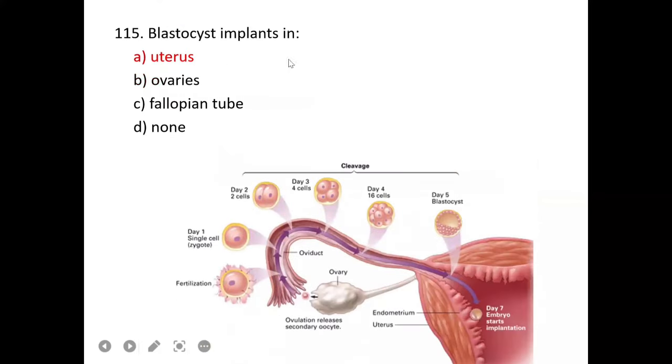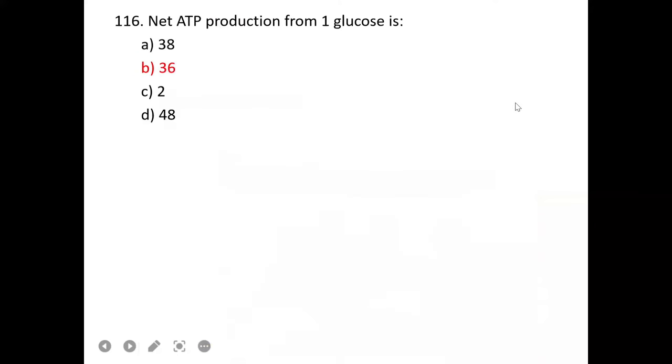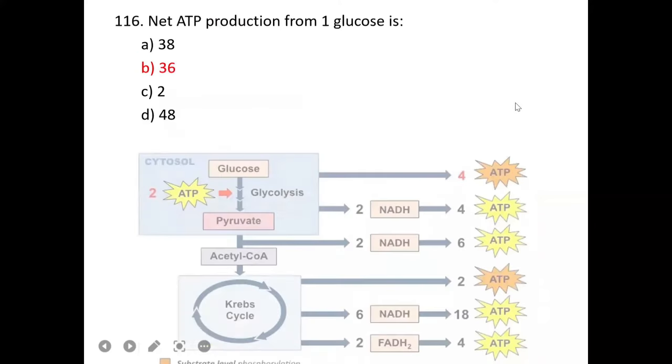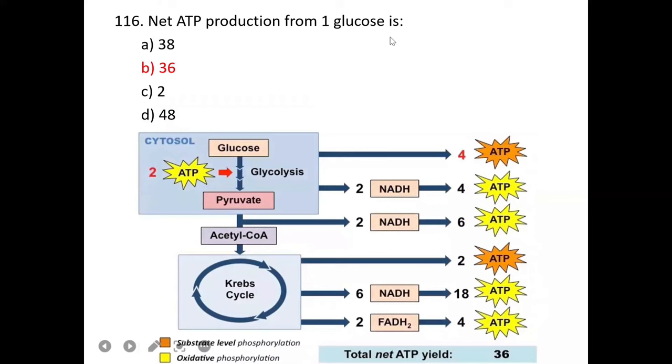Which of the following is derived from cholesterol? Cholesterol derivatives are not vitamin D, glucagon, or albumin. D is correct. Subduction of oceanic and continental plates occurs at convergent boundary, where continental and oceanic plates meet.